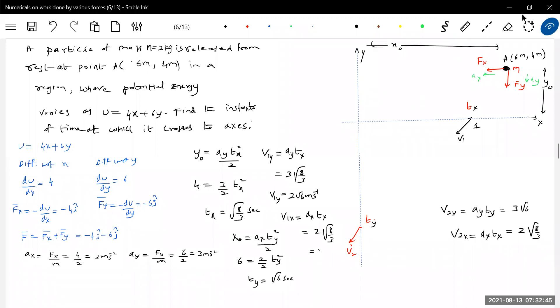Which will be greater? ty is greater, which is the time taken to cross the y-axis. tx is the time to cross the x-axis. So first the particle touches the x-axis, then the y-axis, moving in some curved path, not a straight line.